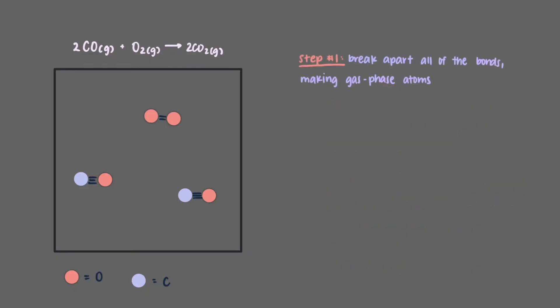Let's jump in. We said that the first step of our crazy process is to break apart all of the bonds making gas phase atoms. What do you predict about the delta H of this step? To break bonds, energy is required, which means that energy is absorbed. Step one is very endothermic. In this reaction, we break two carbon-oxygen triple bonds and one oxygen-oxygen double bond.